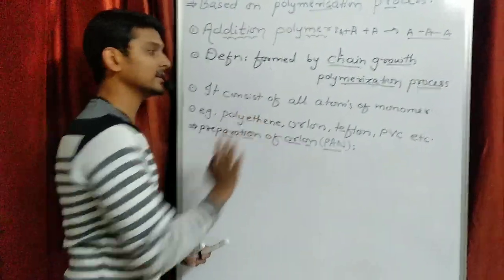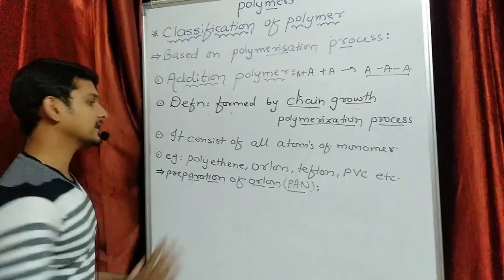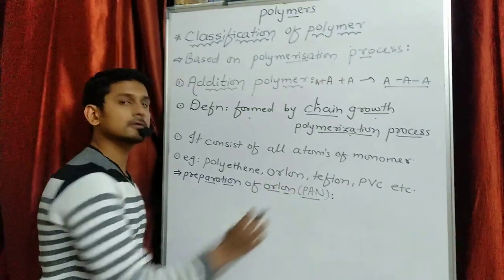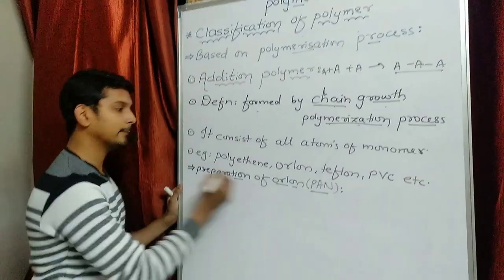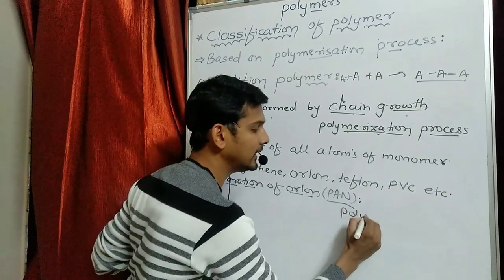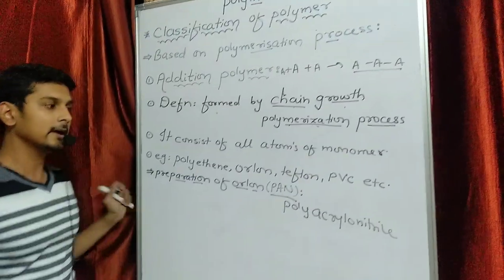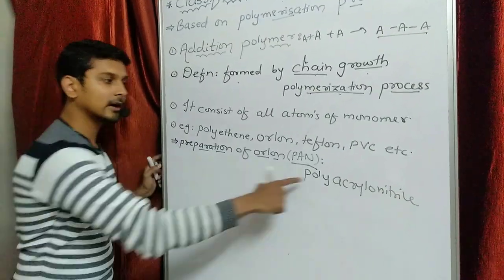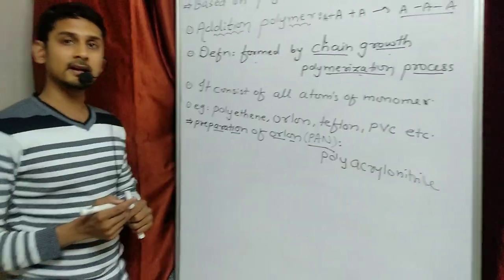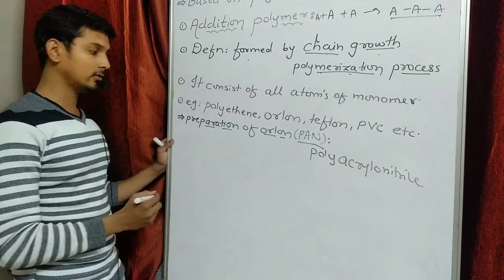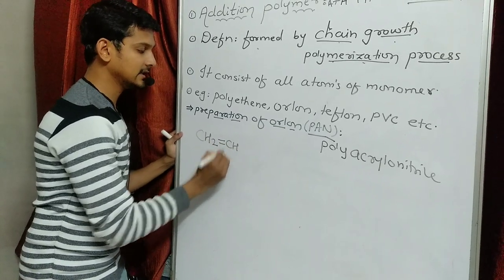So let us start with Orlon, since we covered Polythene and PVC last time. Orlon is also called PAN. What does PAN mean? PAN stands for polyacrylonitrile. So what is the formula of acrylonitrile? Acrylonitrile has the formula: CH2 double bond CH-CN.